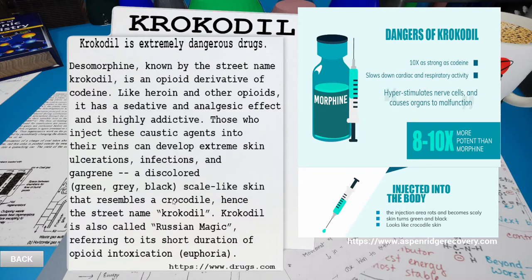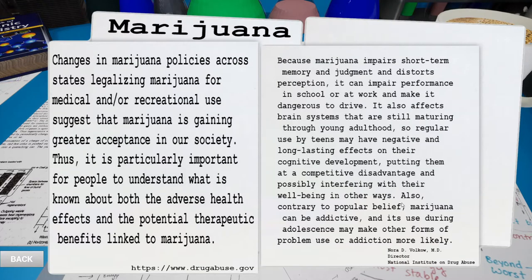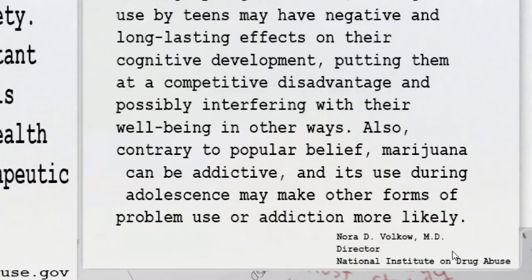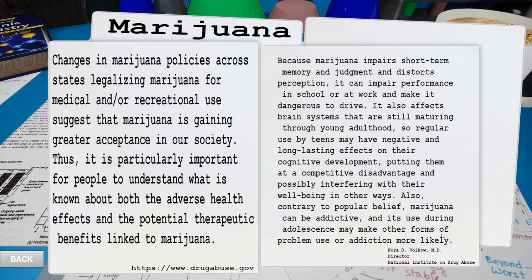Crocodile — this is King K. Rool's drug of choice. Also, contrary to popular belief, marijuana can be addictive, and its use during adolescence may make other forms of problem use or addiction more likely. That's interesting — I thought the popular belief was that marijuana is not chemically addictive but psychologically addictive. I don't know if anything is just psychologically addictive — the only reason we do things is because there are internal reward systems within our brains.